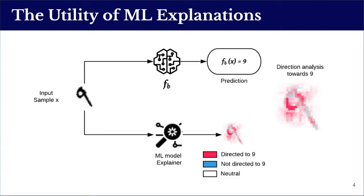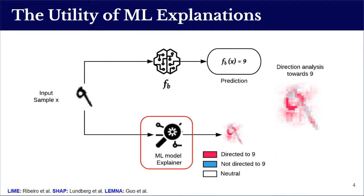In this work, we harness machine learning explanation methods to investigate the effectiveness of each single feature perturbation. We consider a handwritten digits classifier represented by a neural network. It correctly predicts the label of an input image. A machine learning explainer such as LIME, SHAP, or LEMNA reveals the feature direction of each pixel. Pink pixels directed toward the true label '9' explain the correct prediction of the classifier — these are called positive features.